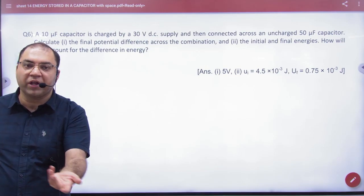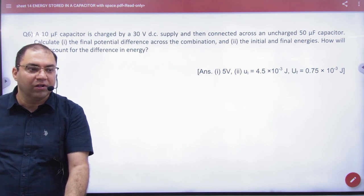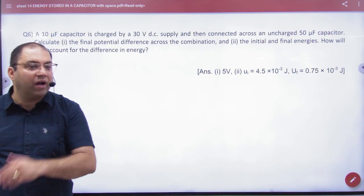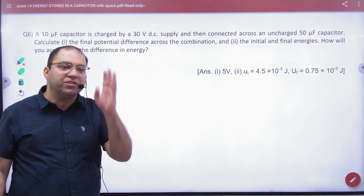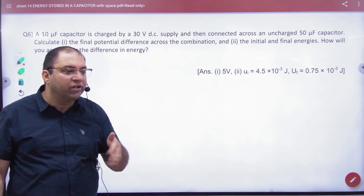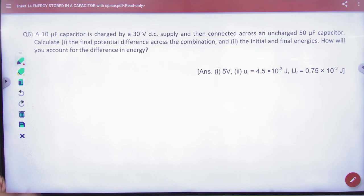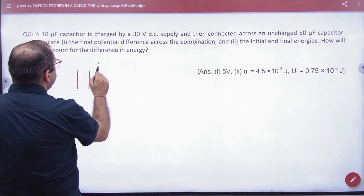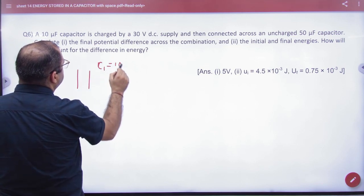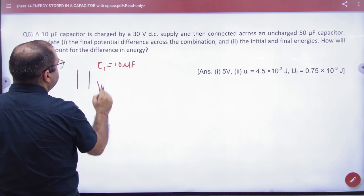Common potential from last lecture. So when the charged capacitor is connected with the uncharged, the first thing is common potential. Then let's start the question. So you have C1 = 10 microfarad, V1 = 30 volts.